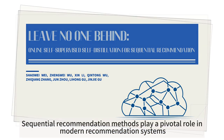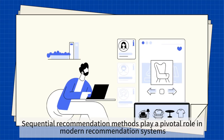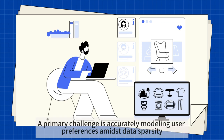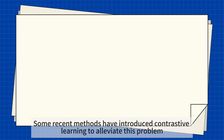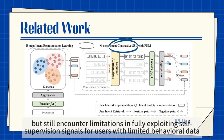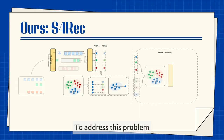Sequential recommendation methods play a pivotal role in modern recommendation systems. A primary challenge is accurately modeling user preferences amidst data sparsity. Some recent methods have introduced contrastive learning to alleviate this problem, but still encounter limitations in fully exploiting self-supervision signals for users with limited behavioral data.